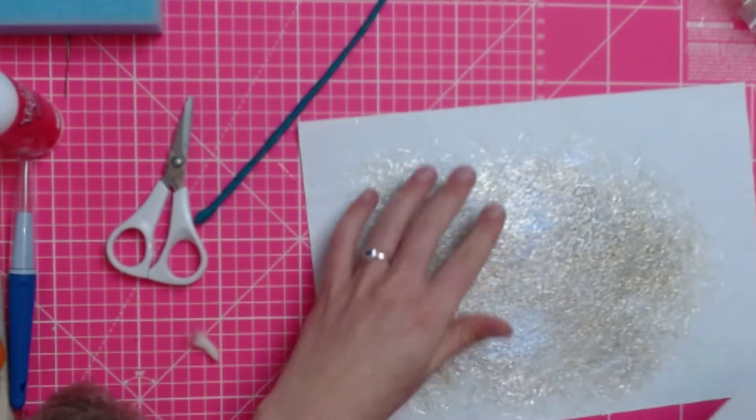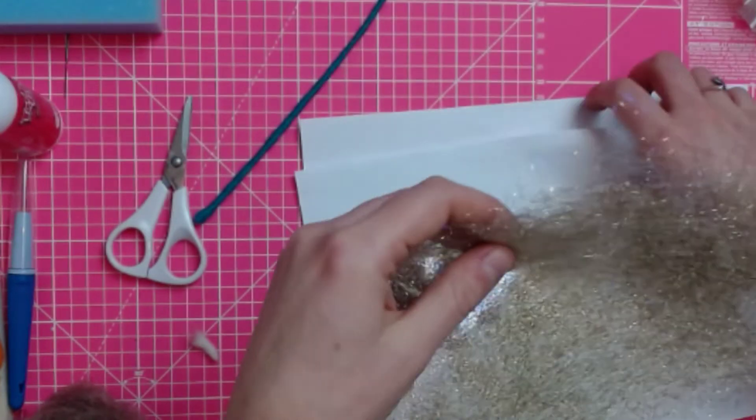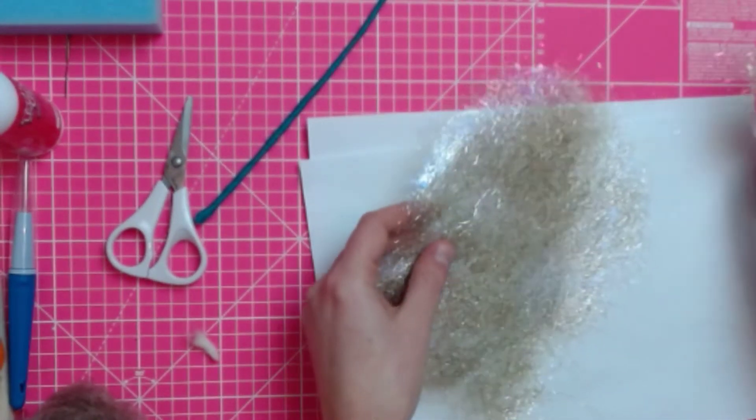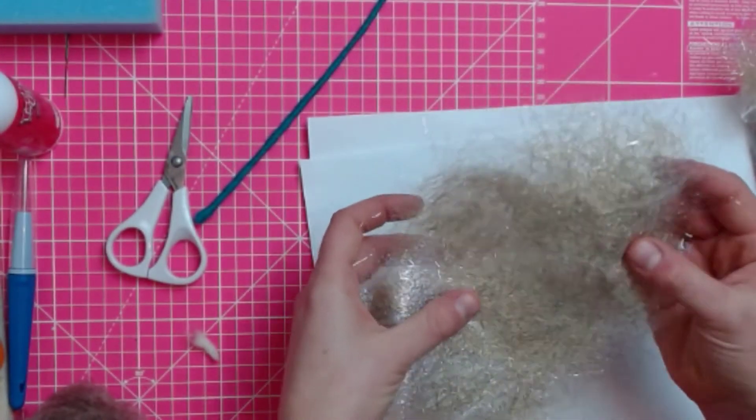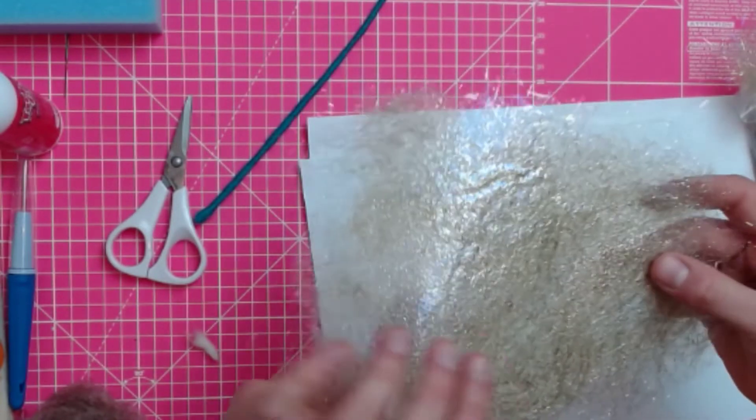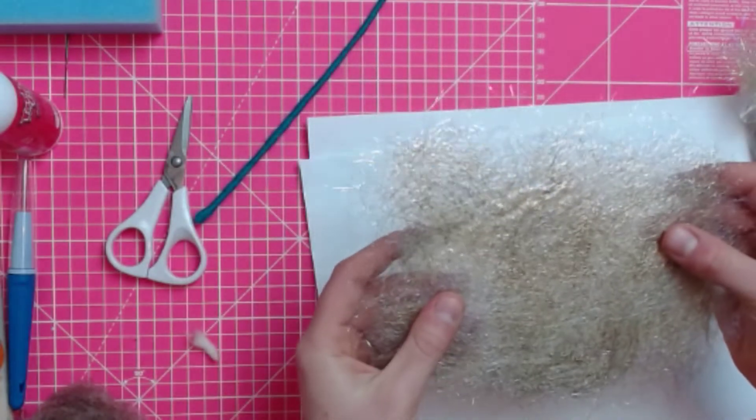So here's one I made earlier. Blue Peter moment. And this is the Angelina fiber once it's been ironed into a sheet. And you can see it's like paper. You can cut into it and you can make different shapes.